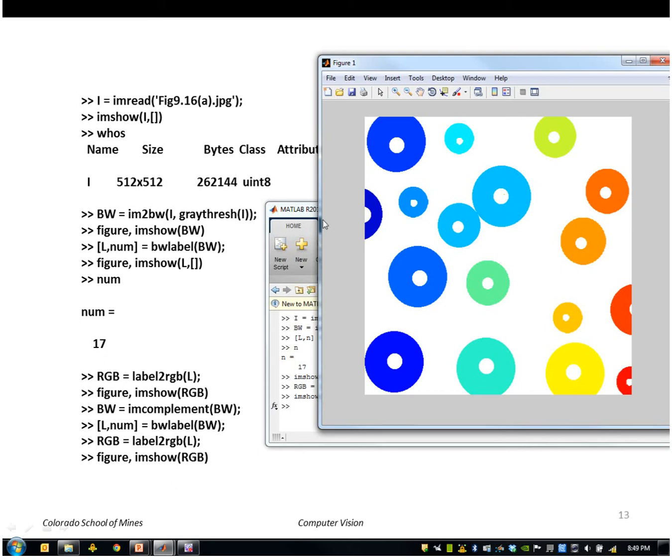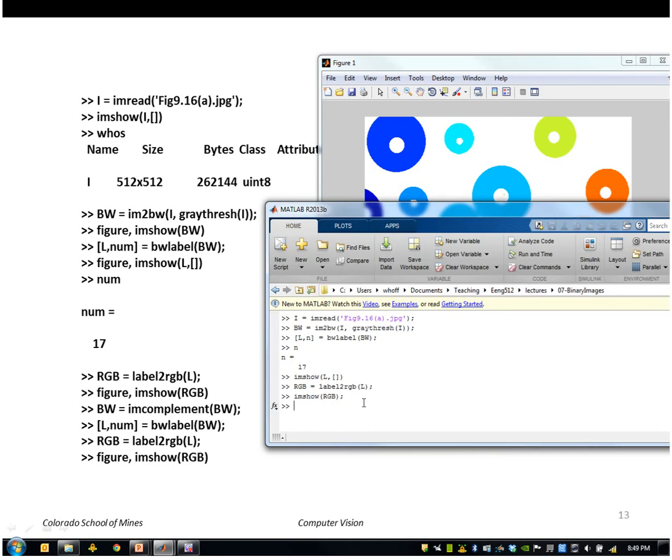Okay so if we want to find the little black disks inside we would complement the image either using this method or using imcomplement.